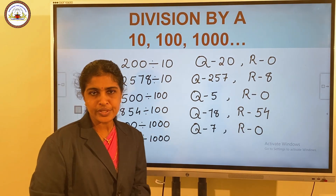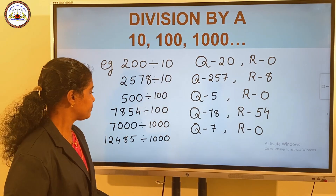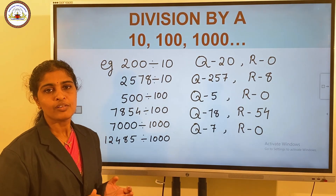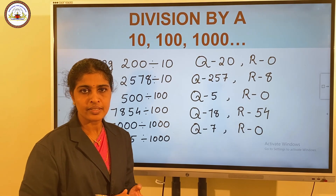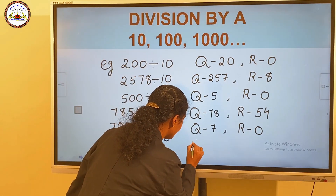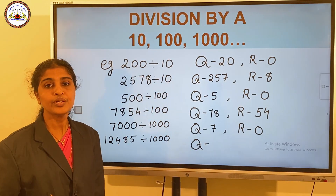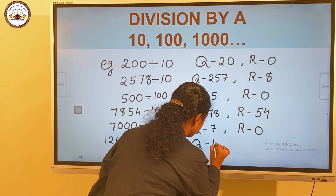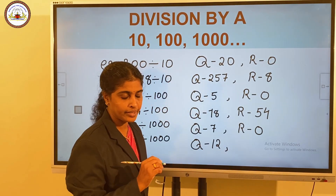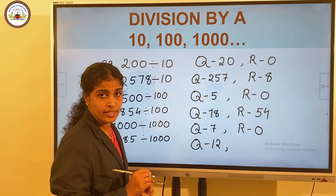Another example: 12,485 divided by 1,000. We get the quotient by removing the ones, tens, and hundreds places. So the quotient is 12 and the remainder is 485.